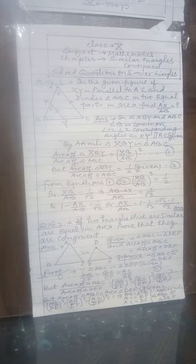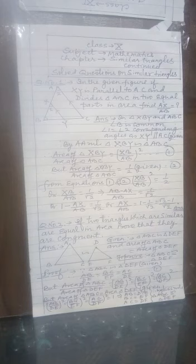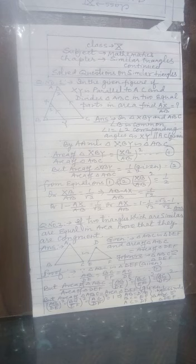But area of triangle ABC upon area of triangle DEF by area theorem of similar triangles is AB upon DE whole square or BC upon EF whole square or AC upon DF whole square. But both the triangles are equal in area, therefore their ratio will be equal to 1, that is all three ratios will be equal to 1.